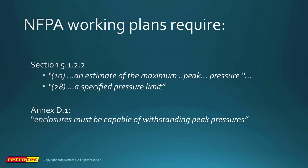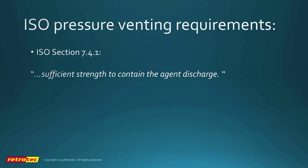The next requirement is what's called the specified pressure limit — how much pressure can the walls take. Appendix D1 says that enclosures must be capable of withstanding peak pressures produced at discharge. Both NFPA and ISO say essentially the same thing when it comes to peak pressure evaluation: ISO section 7.4.1 states that enclosures must have sufficient strength to contain the agent discharge. The requirements for peak pressure are very close between the two standards.